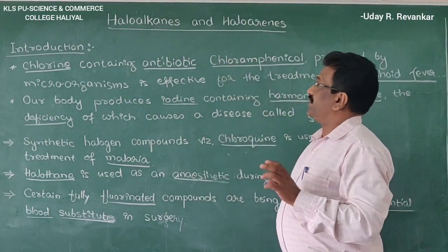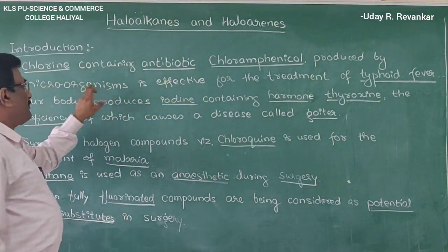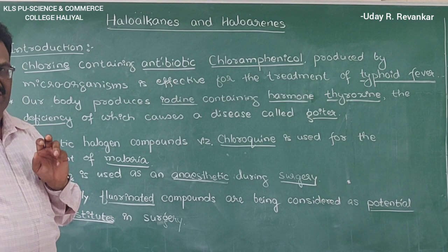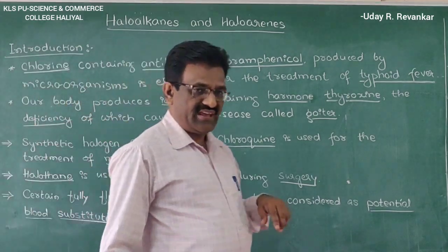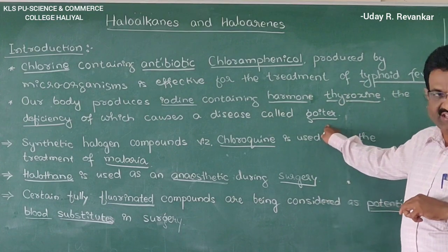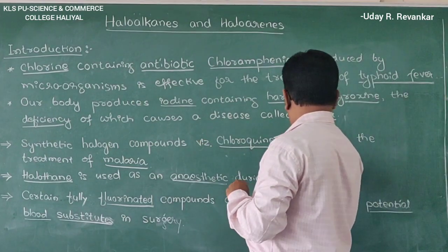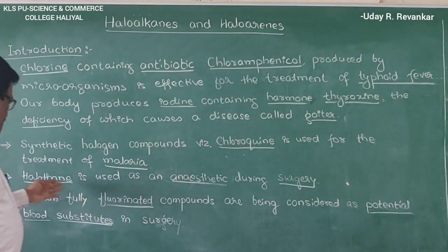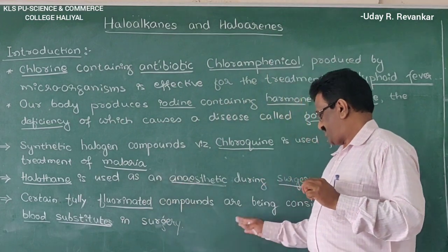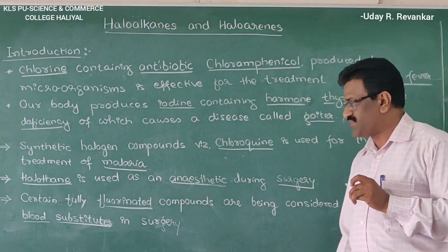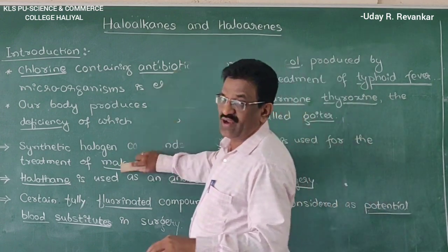In nature, chlorine-containing compounds such as chloramphenicol are produced by microorganisms and are effective for the treatment of typhoid fever. Iodine-containing hormones such as thyroxine are produced in our body and are effective for the treatment of disease. Synthetic compounds such as chloroquine are used for the treatment of malaria. Halothane is used as an anesthetic during surgery, and certain fluorinated compounds are considered potential blood substitutes — that is, artificial blood.